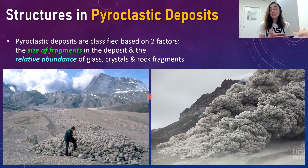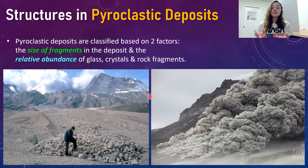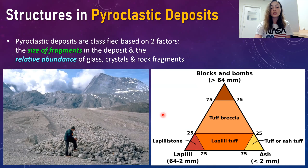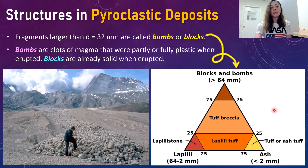Now moving on from mafic volcanic structures into pyroclastic deposits or pyroclastic structures — still volcanic, but now toward more felsic compositions. Felsic extrusive or volcanic lavas typically form pyroclastic deposits, and these are classified based on two main factors: the size of fragments in the deposit, and the relative abundance of glass, crystals, and rock fragments. We use a ternary diagram to figure out what our pyroclastic deposit is classified as based on fragment size.